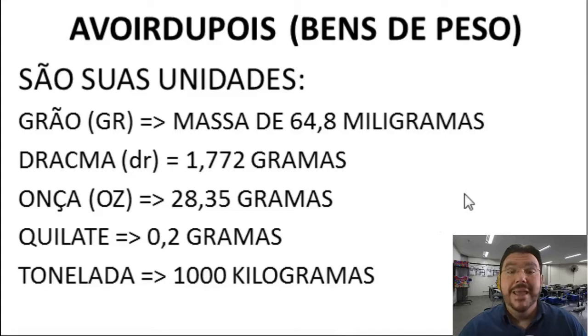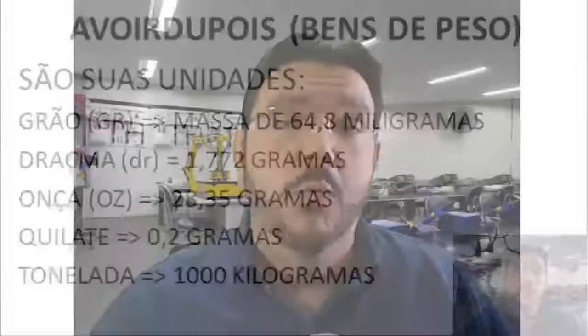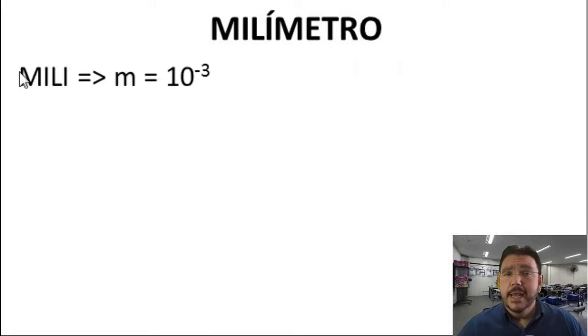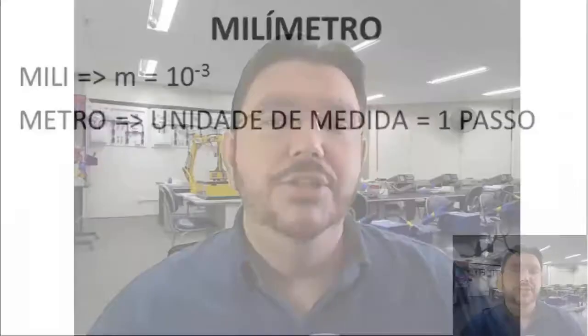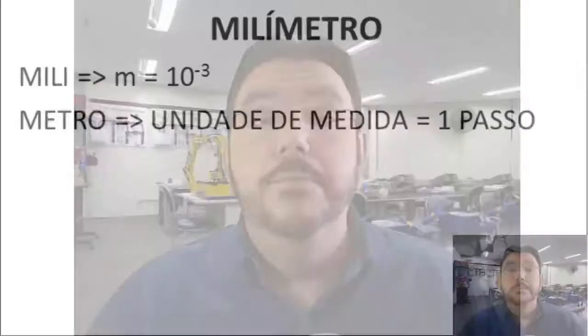Esses foram os primeiros bens relacionados a peso, muito utilizados hoje nos países de língua inglesa. Trazendo para o contexto importante para o técnico em mecatrônica, vamos falar do milímetro. O milímetro vem do mili (10⁻³), que é um submúltiplo, e do metro, a unidade de medida equivalente a um passo. O milímetro é a milésima parte do metro — um metro dividido por mil.